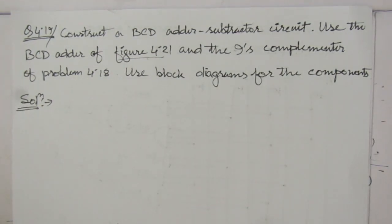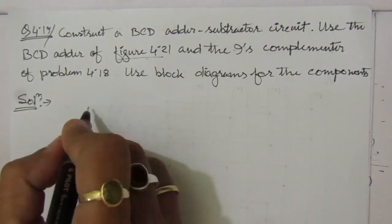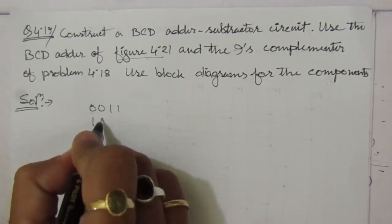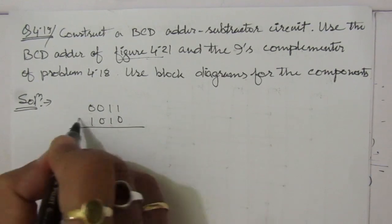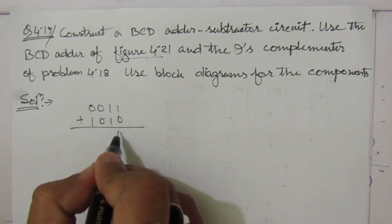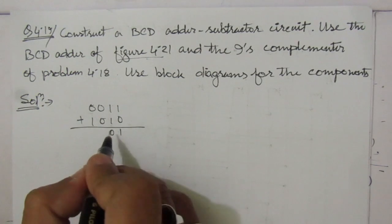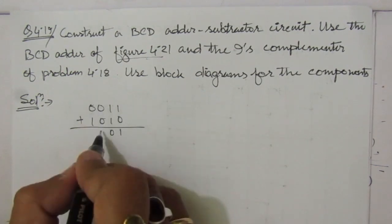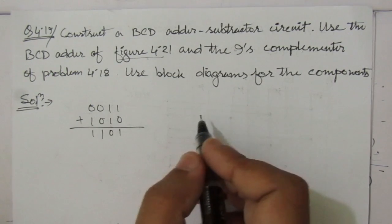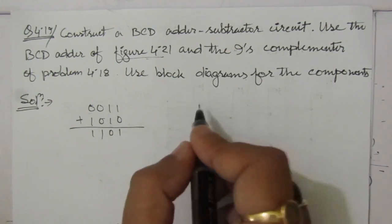First, let us understand some key points. Whenever we have to perform an addition operation, we can directly do so in digital electronics. For example, if we have 0011 and 1010, we can directly add them: 1 plus 0 is 1, then 1, then 0 and 1 — giving the addition result directly.